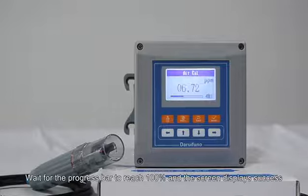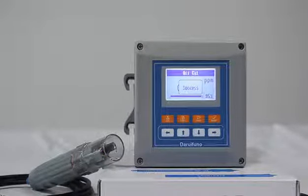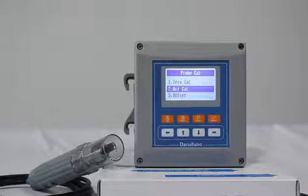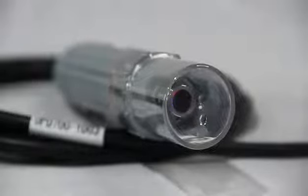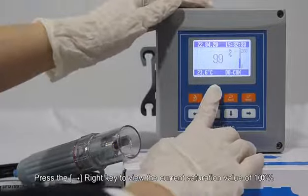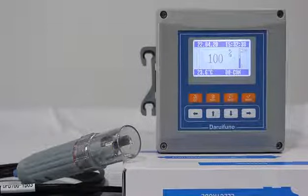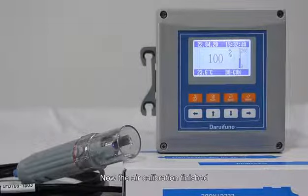Wait for the progress bar to reach 100% and the screen displays success. Return to the main measurement interface to view the current reading. Press the right key to view the current saturation value of 100%. Now the air calibration is finished.